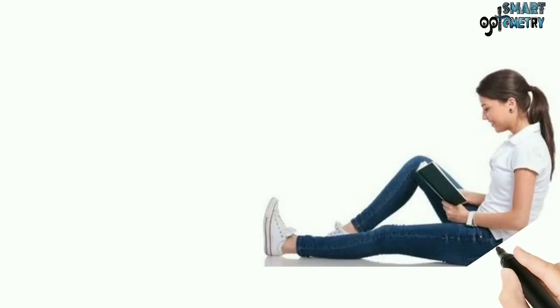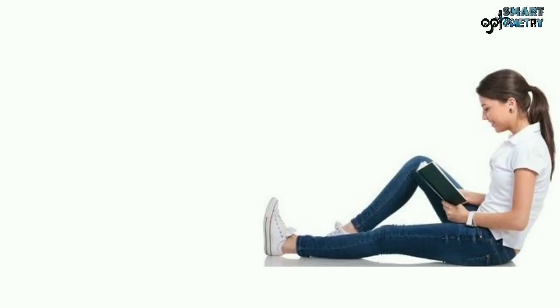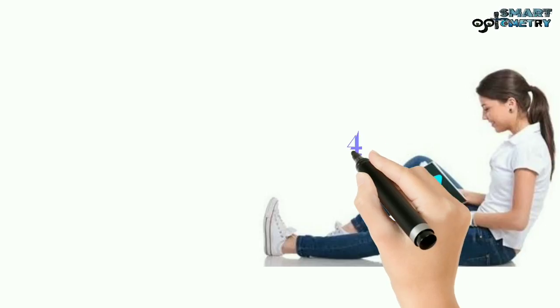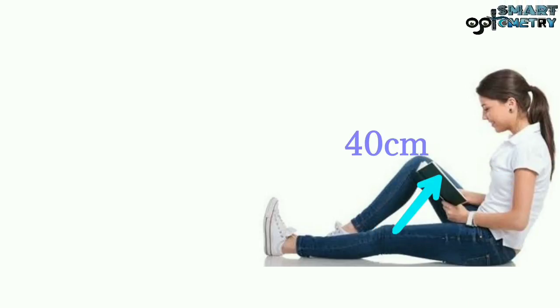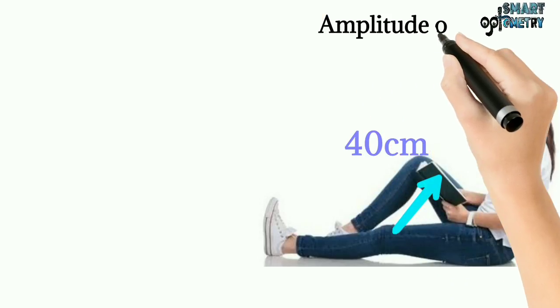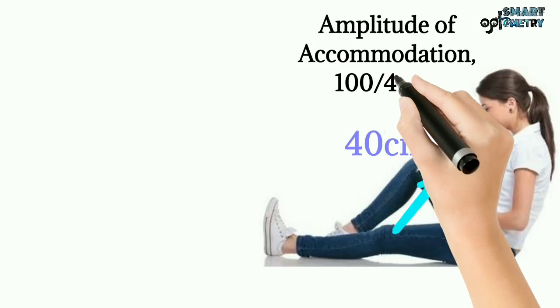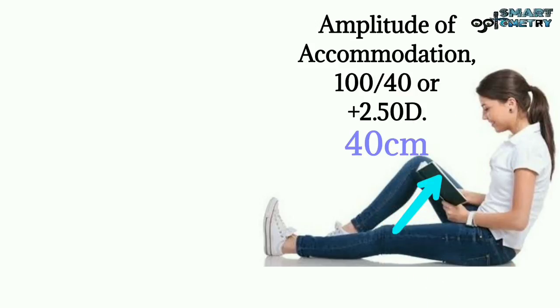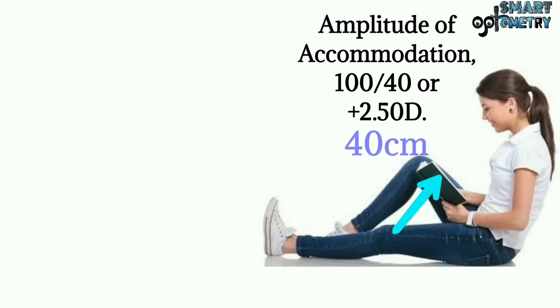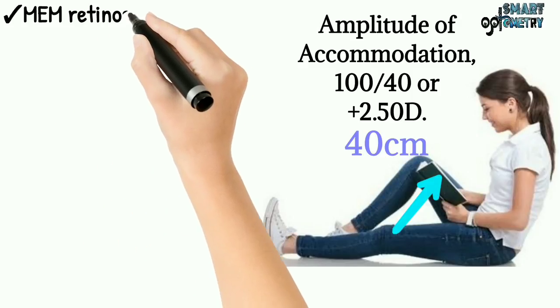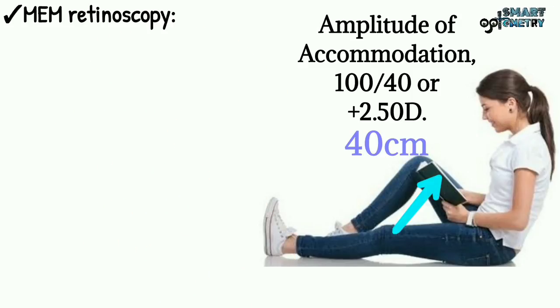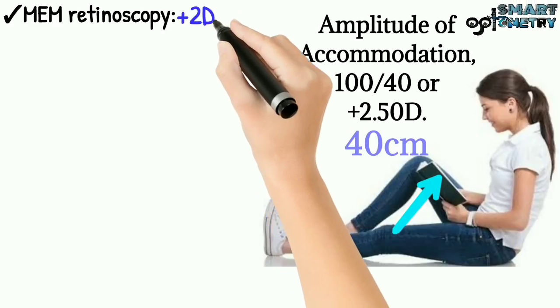Suppose you are reading a book at a distance of 40 cm. At 40 cm, to see that book clearly, we need an amplitude of accommodation of 100 divided by 40, or 2.5 diopters. While you are reading that book at 40 cm, we perform monocular estimated method (MEM) retinoscopy and find your amplitude of accommodation to be plus 2 diopters.